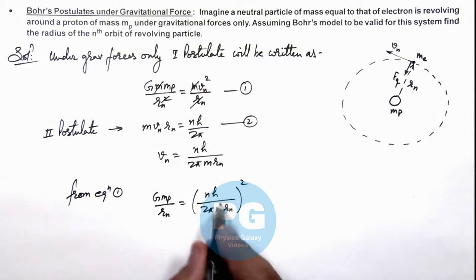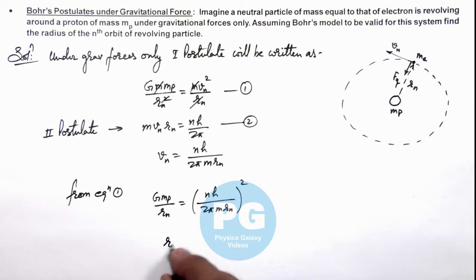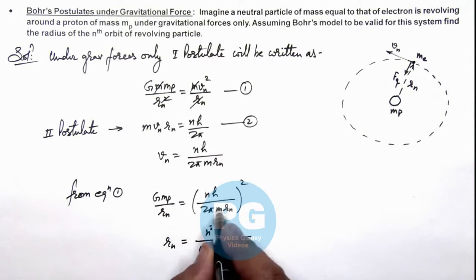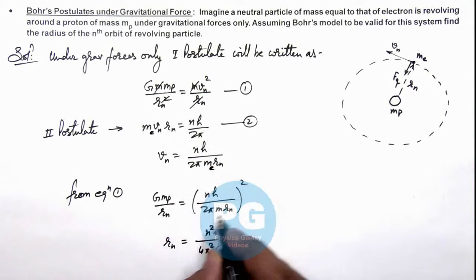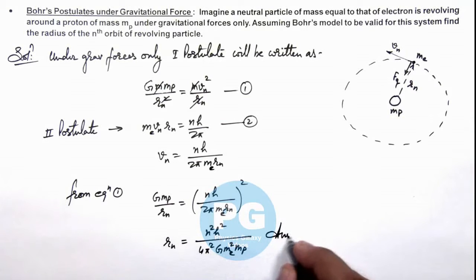Now if you simplify this expression to get the value of rn, the value of rn we are getting is n square h square over 4π square G m square mp, where this m is the mass of electron. Here you can write this as electron mass. So this is the final result of the problem.